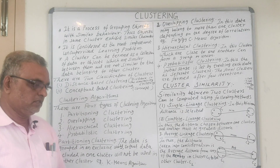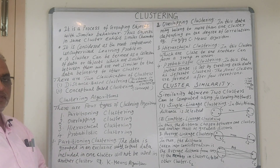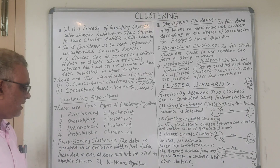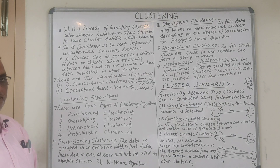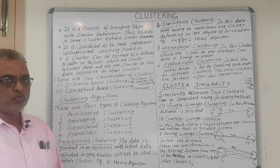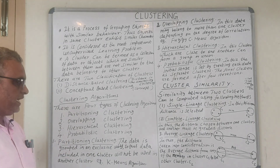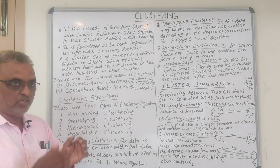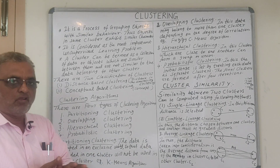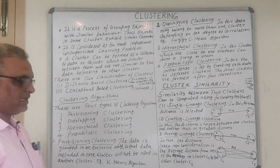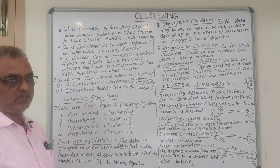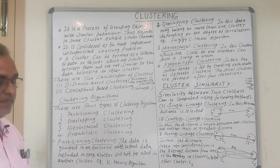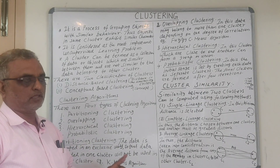In partitioning clustering, the data is grouped in an exclusive way, so that data included in one cluster will not be used in any other cluster. A good example of partitioning clustering is the K-means algorithm.